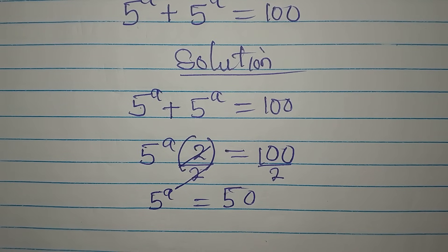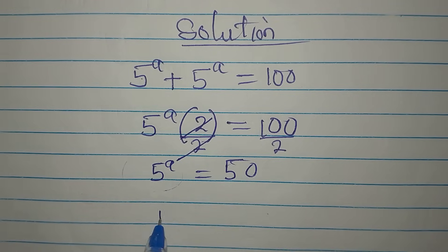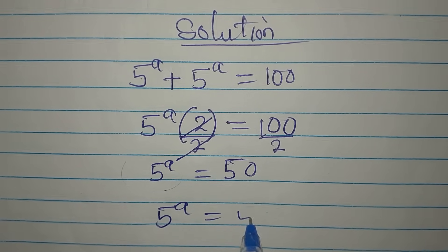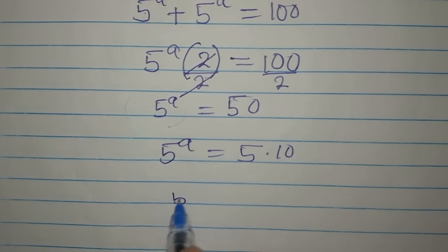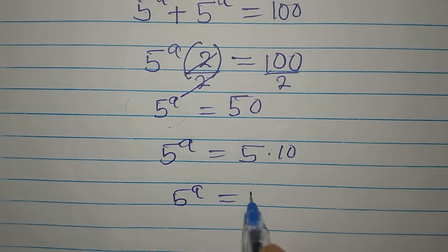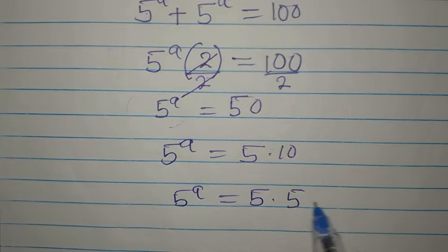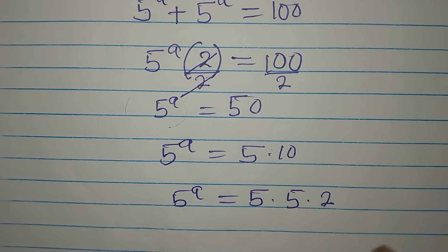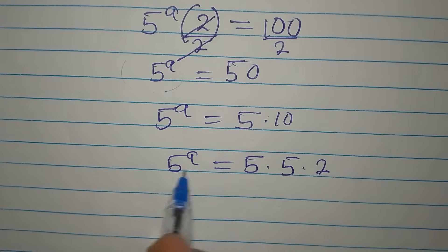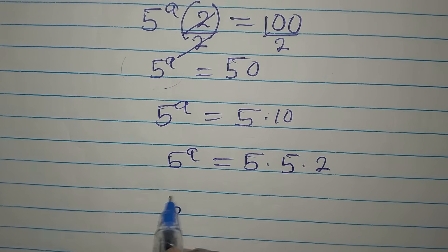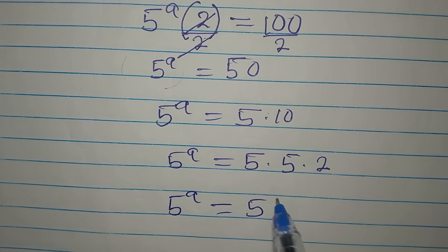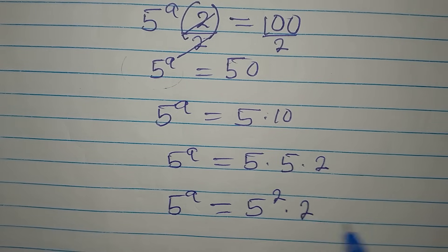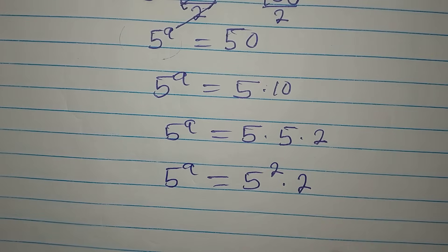Now we cannot express 50 directly in the form 5^a, because 50 is the same as 5 times 10, and 50 can further be expressed as 5 times 5 times 2. So this can be written as 5 to the power of a equals 5 squared times 2.